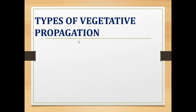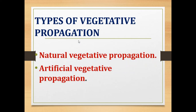Let us see the types of vegetative propagation. There are two types: natural vegetative propagation and artificial vegetative propagation.